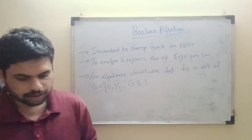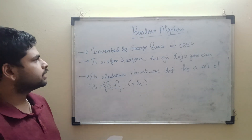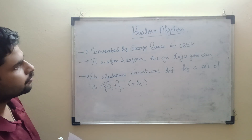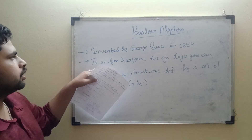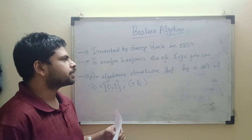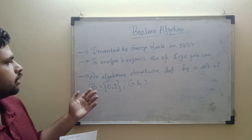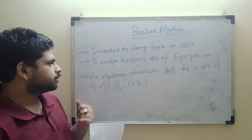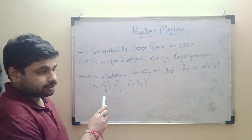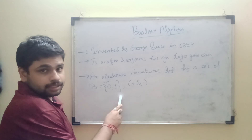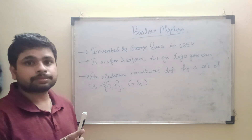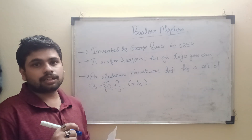Boolean algebra was invented by George Boole in 1854. It was invented to analyze and express the operation of logic circuits. It is an algebraic structure defined by a set of binary numbers, 0 and 1, and is also a binary operation.